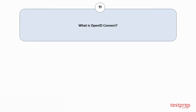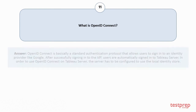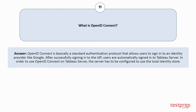Question number 11: What is OpenID Connect? OpenID Connect is basically a standard authentication protocol that allows users to sign into an identity provider like Google. After successfully signing into the IDP, users are automatically signed into Tableau Server. In order to use OpenID Connect on Tableau Server, the server has to be configured to use the local identity store.